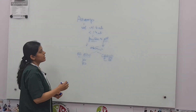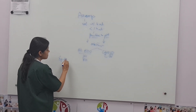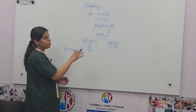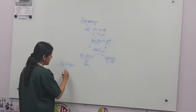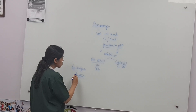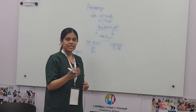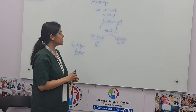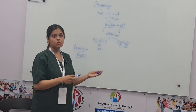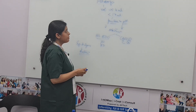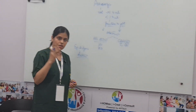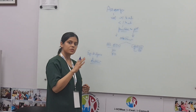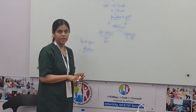Obstruction can also occur at the level of the epididymis. Here, since seminal vesicle secretions are already reaching the semen, the volume, fructose, and pH will be normal. Additionally, examination of testicular volume can tell us whether we are dealing with obstructive or non-obstructive azoospermia. If the testicular volume is low, we are dealing with non-obstructive azoospermia. If the testicular volume is normal, we are dealing with obstructive azoospermia.